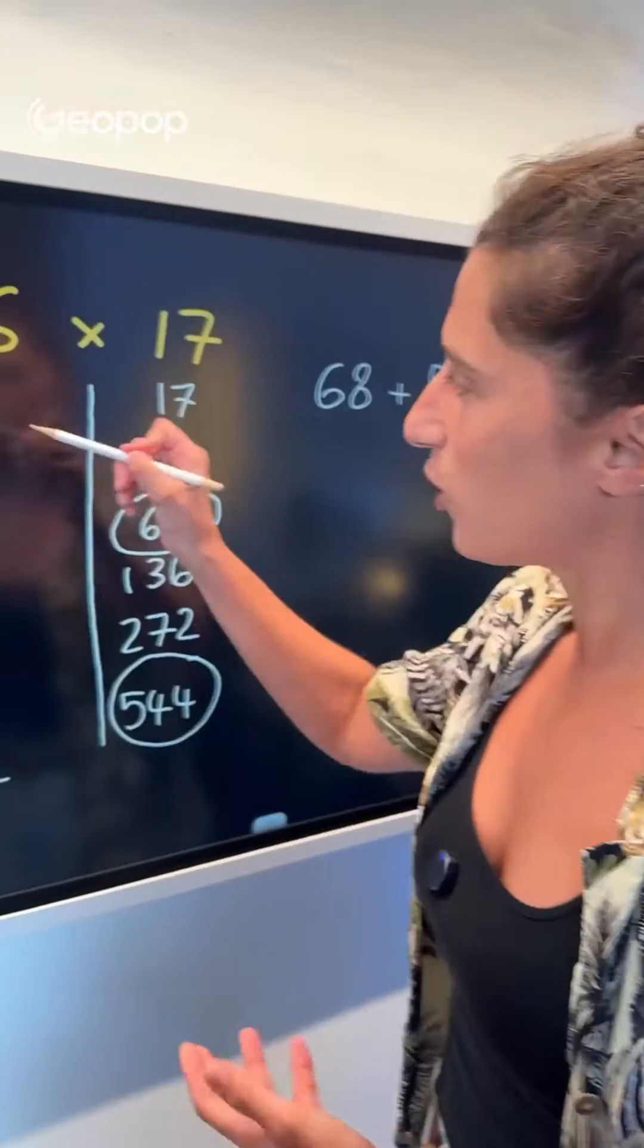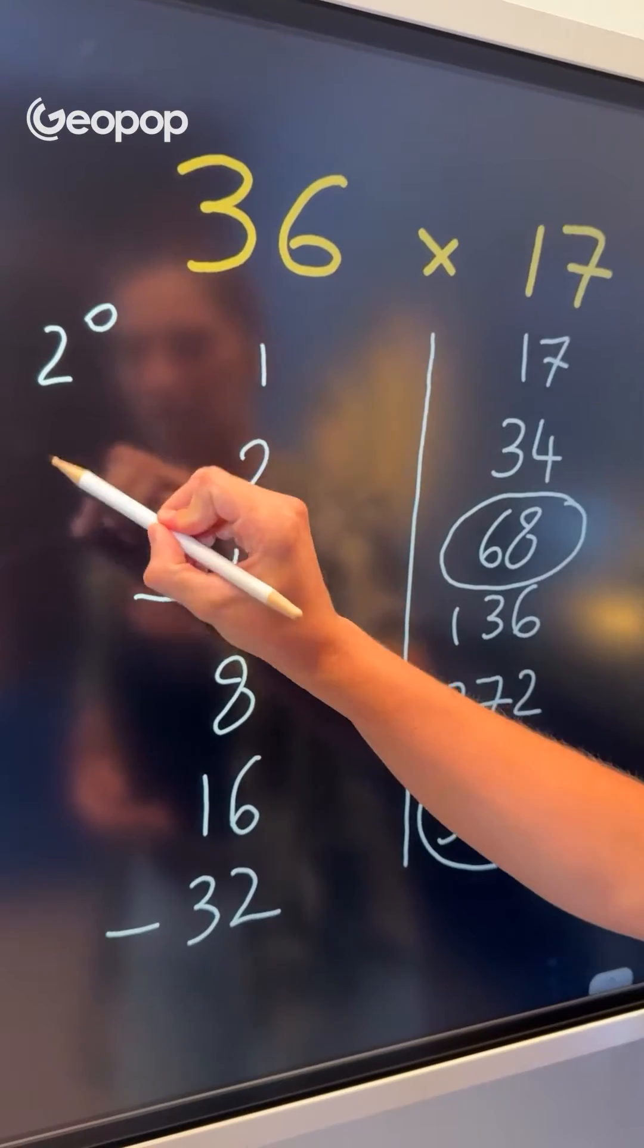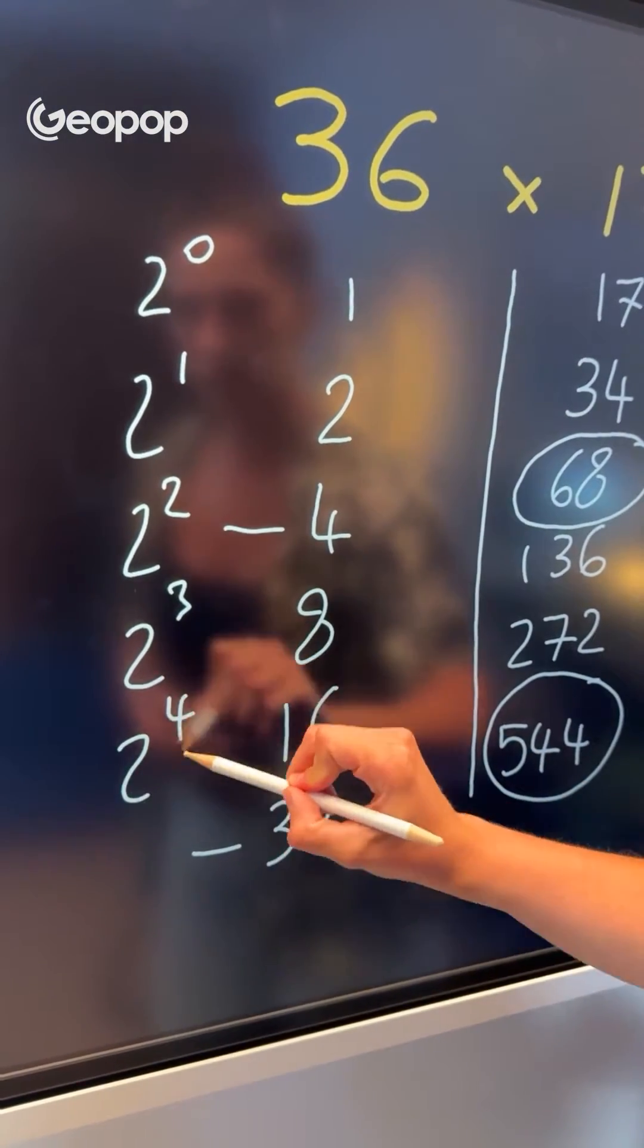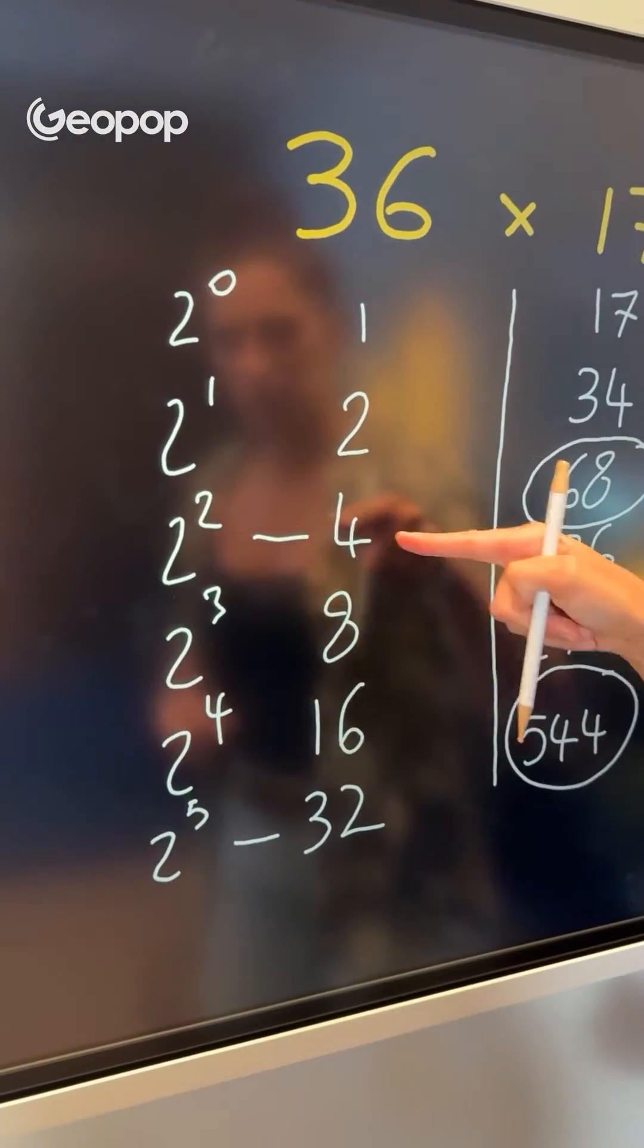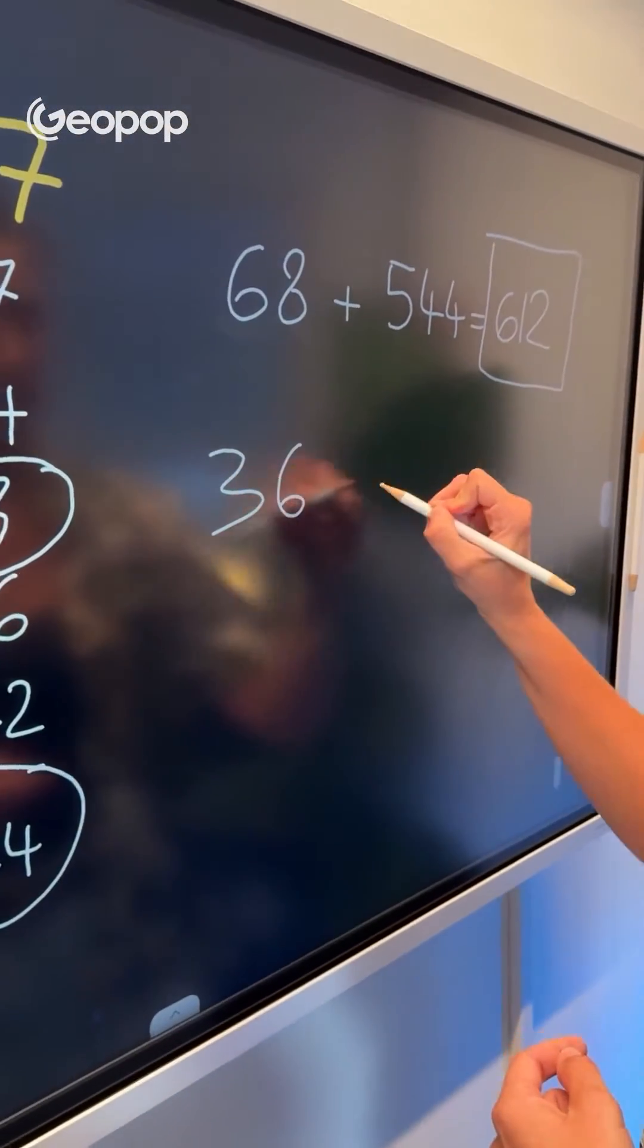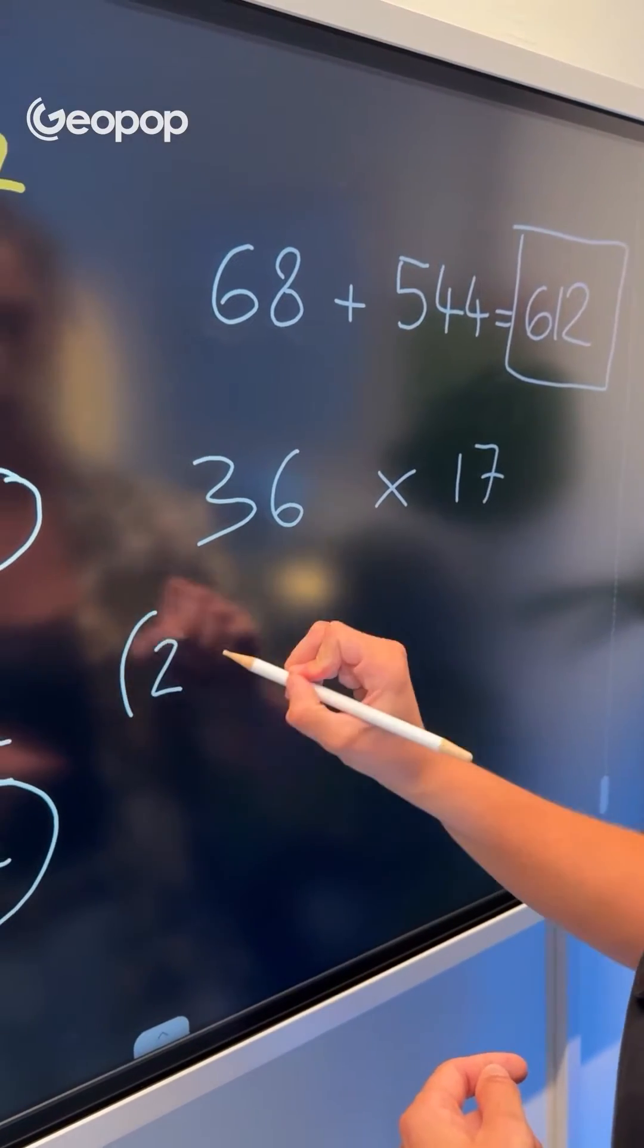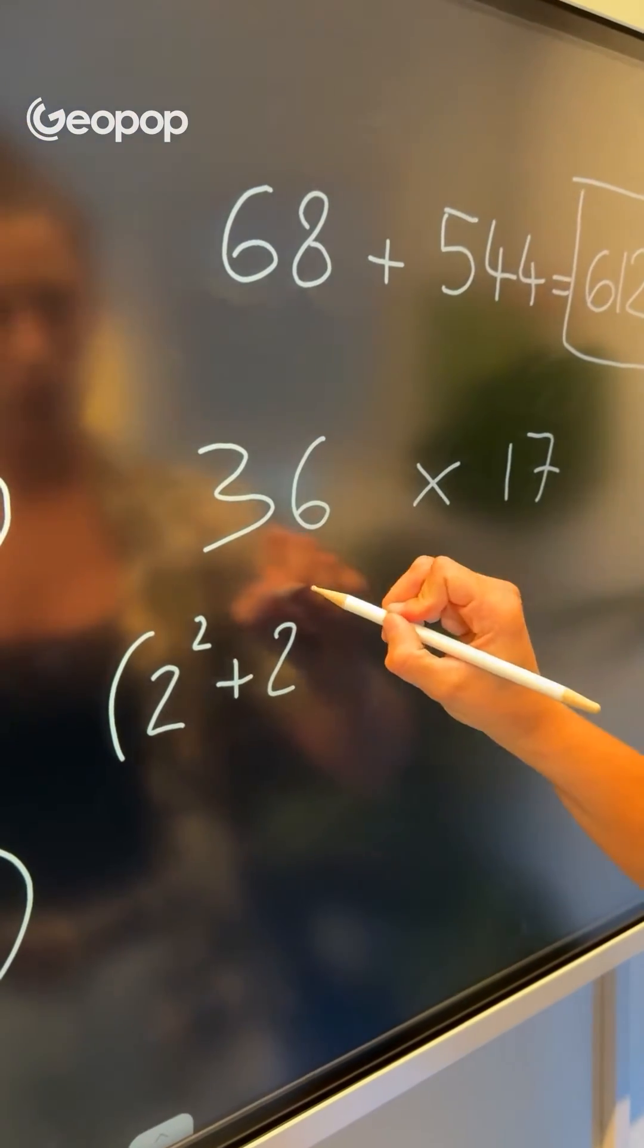Let's see why this method works. What we've written here are precisely the powers of 2. So we've got 2 to the power of 0, 2 to the power of 1, 2 to the power of 2, 2 to the power of 3, 2 to the power of 4, and 2 to the power of 5. And as we said, by choosing 32 and 4, we've actually broken down 36 into powers of 2. So we're calculating 36 times 17, and in 36's place, we write 2 to the power of 2 plus 2 to the power of 5, which are the powers we need, times 17.